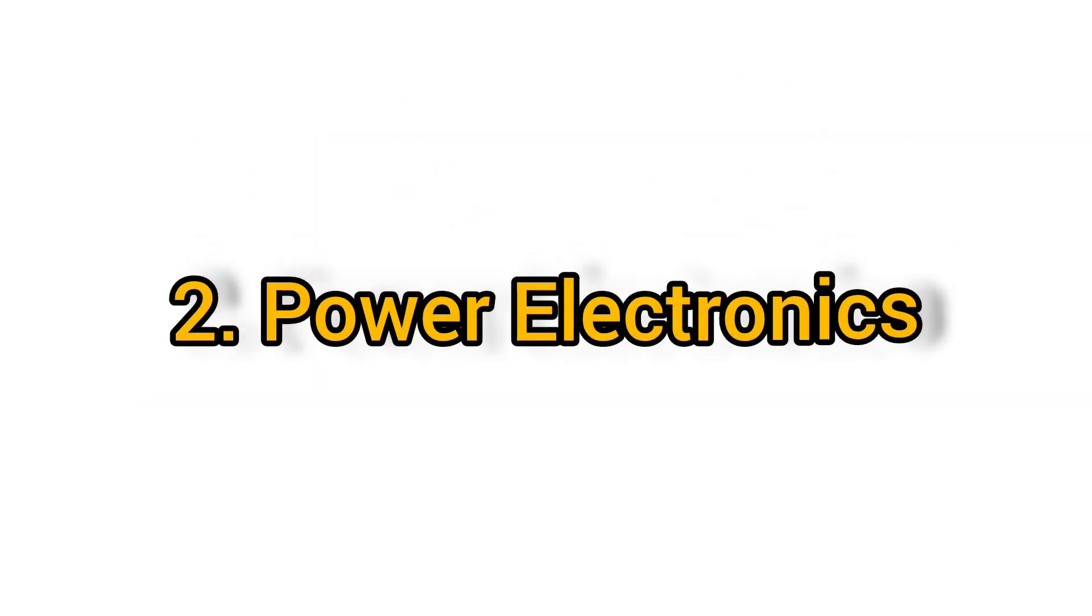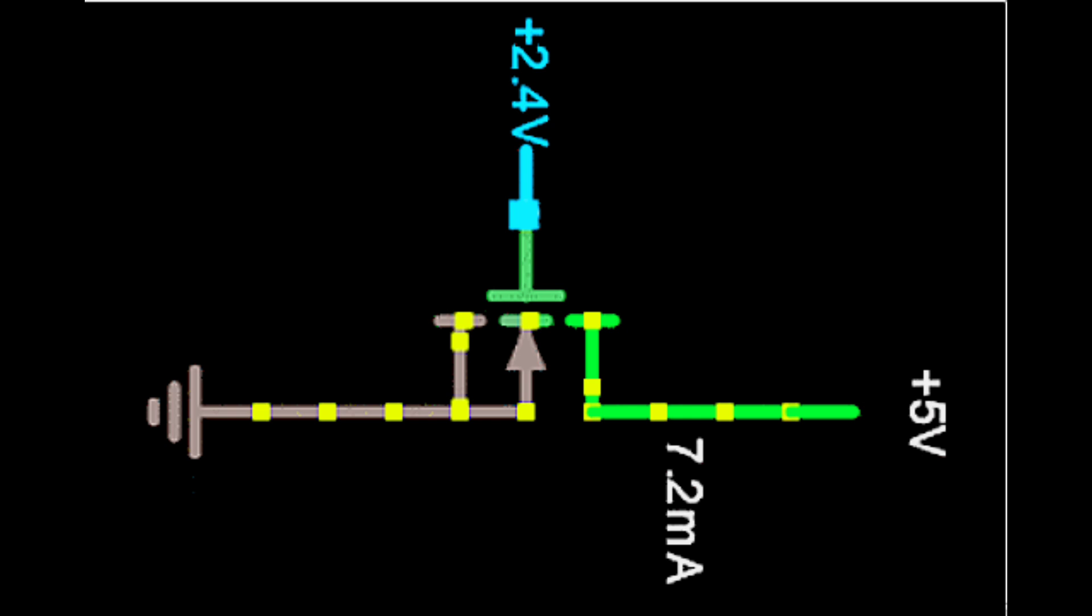In power electronics, N-channel MOSFETs handle high currents in devices like DC-DC converters, solar inverters, and motor drivers. They're often found in low-side switching configurations where the source is connected to ground.